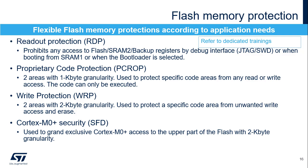The write protection is configured using the WRP option bytes; these options protect specific code areas from unwanted write access and erase. The write protected area can be defined with 4-kilobyte granularity. The Cortex-M0+ security is configured using the SFD option byte; this option secures a specific flash memory area for exclusive Cortex-M0+ access. The Cortex-M0+ security area can be defined with a 4-kilobyte granularity. Please refer to the specific trainings about system protections and Cortex-M0+ security for more details about these protection options.